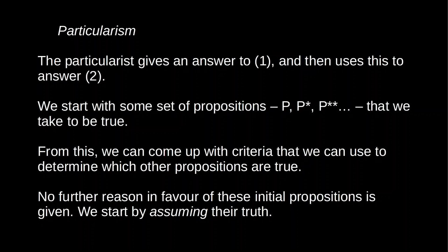So the particularist might just take it to be true that, for example, she has hands, that the sun rises in the east and sets in the west, that 1 plus 1 equals 2, that torturing children is wrong, and so on. From this set of true propositions, the particularist can then propose a criterion for distinguishing true propositions from false ones. She's assuming various beliefs — assuming an answer to the first question — and then using those to come up with criteria she can apply to propositions she's currently undecided about.